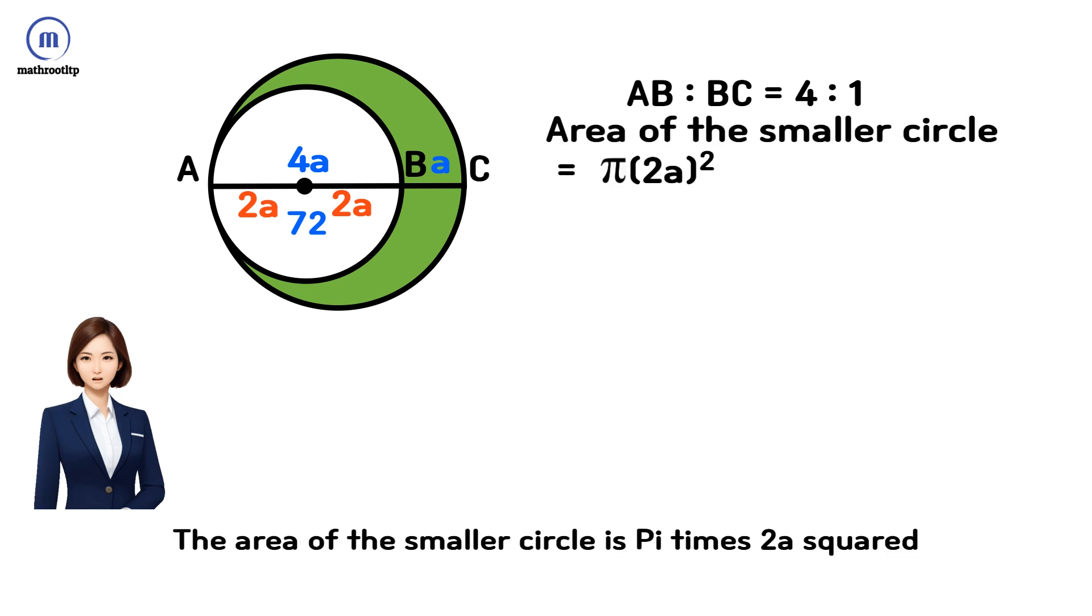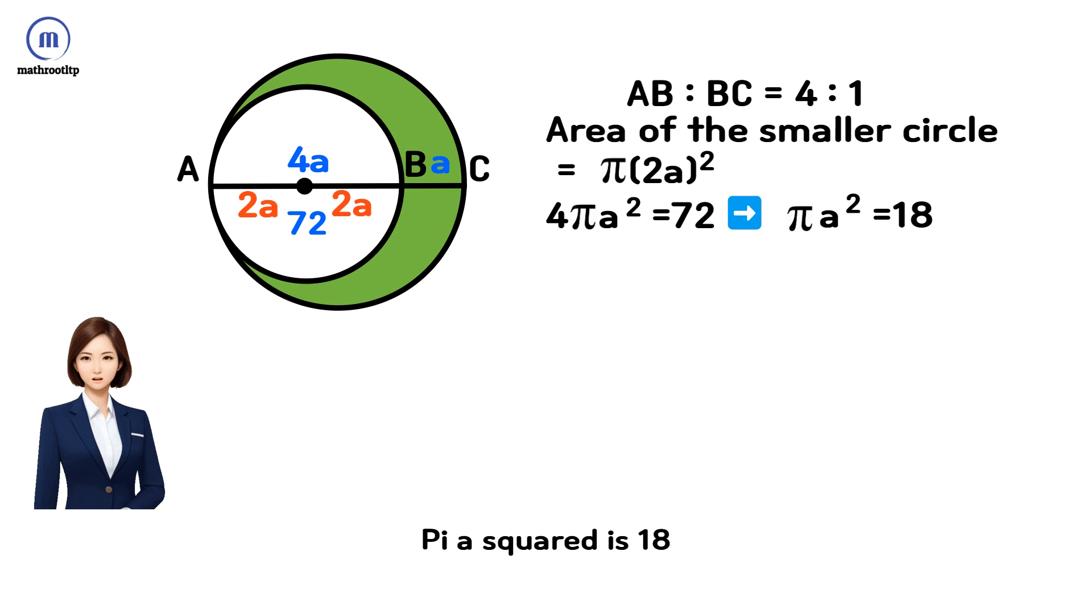The area of the smaller circle is π(2a)². They said that the area of the small circle is 72, so 4πa² = 72. Therefore, πa² = 18.